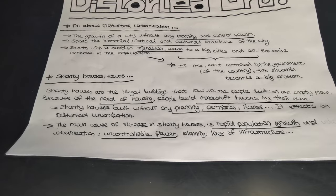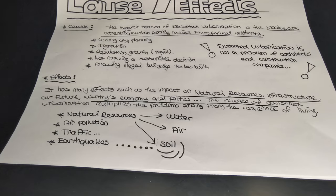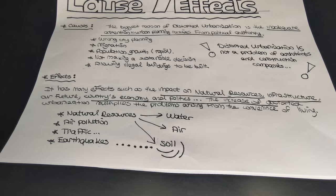Let's talk about the causes and effects of distorted urbanization. Distorted urbanization is a very important problem in the world that can affect our future. There are many reasons for its formation. The biggest reason is the inadequate attention urban planning receives from political authority. It is a fundamentally wrong urban planning problem including population growth and similar issues, and it occurs due to unplanned street design, administrators not making sustainable decisions, and allowing illegal buildings to be built.